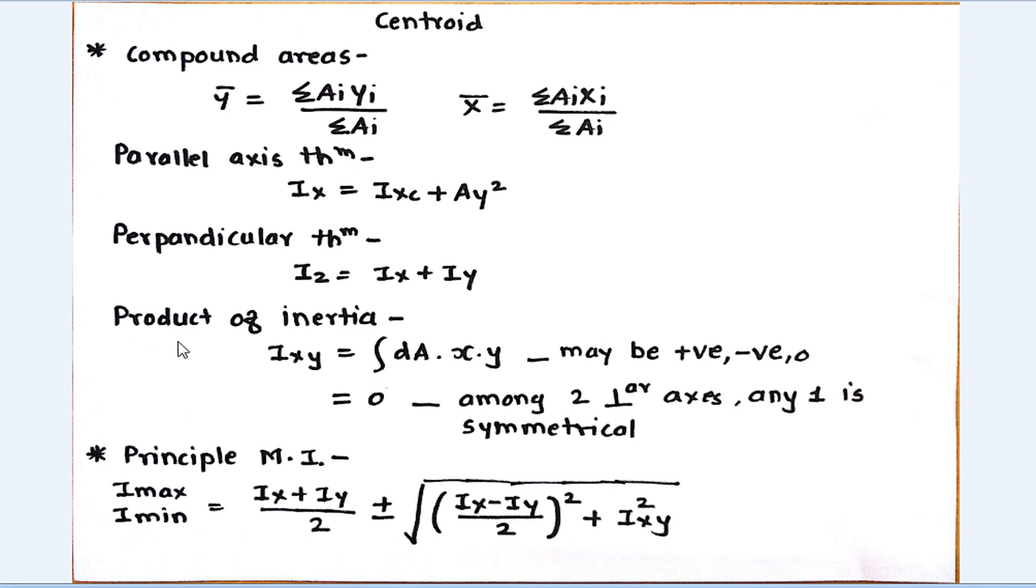Next is product of inertia. Ixy equals integration of dA into x into y. Product of inertia may be positive, negative, or zero. It is zero in the condition that out of two perpendicular axes, any one axis is symmetrical of the member. Then Ixy is zero.